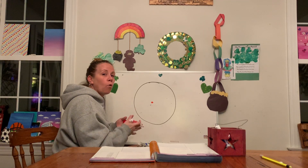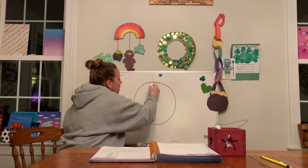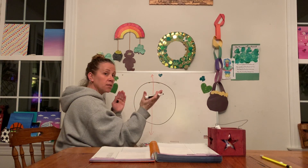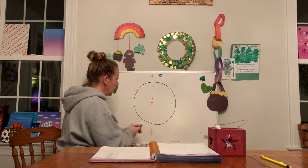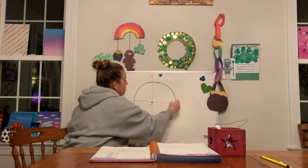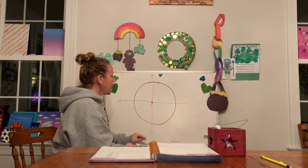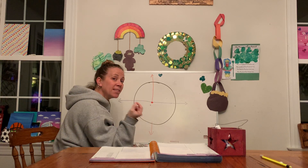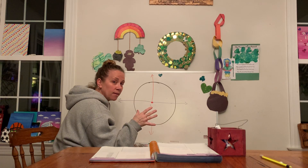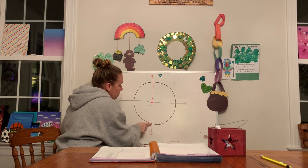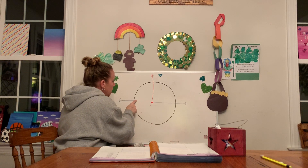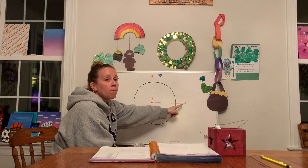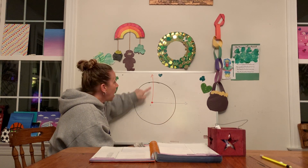These lines are then going to form our angles. If I have a line coming in this way and it intersects — intersects means to cross — with a line coming in this way, I've created an angle. I'm going to erase the rest of these lines, but remember they're still there. Now look what I've created: an angle.